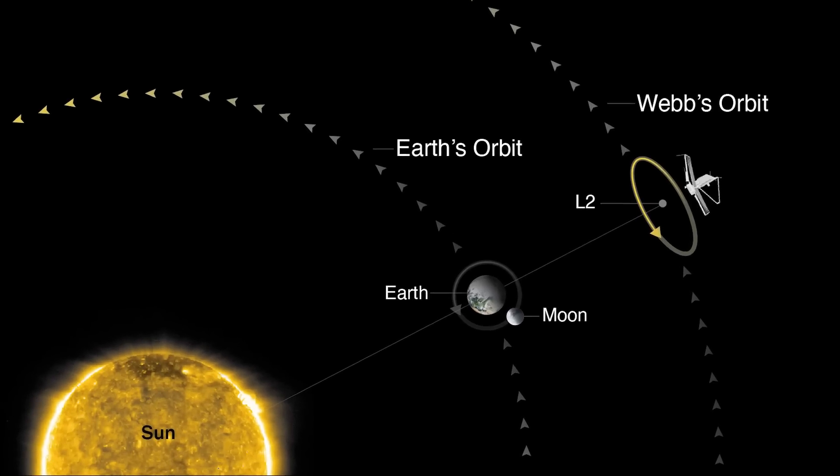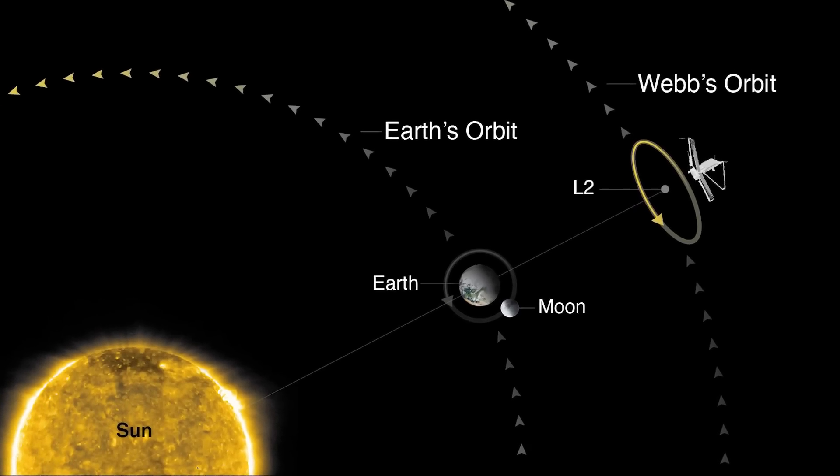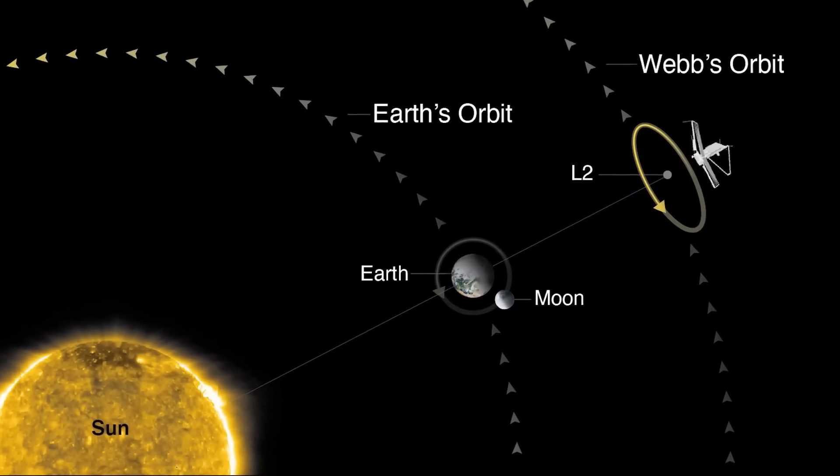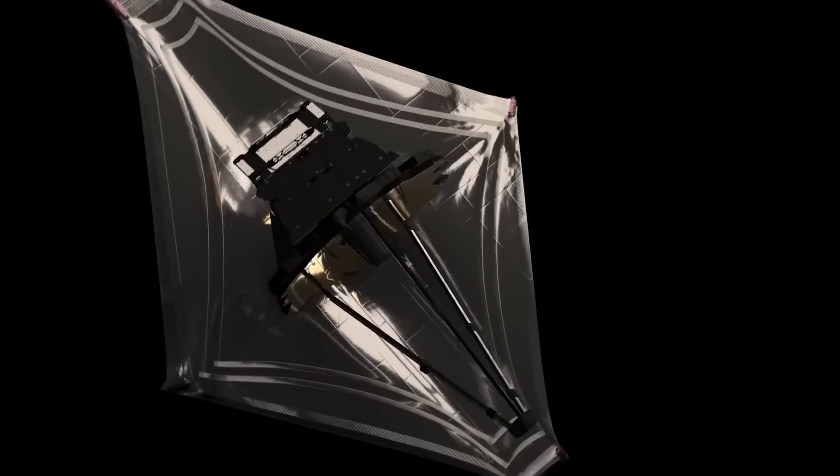The James Webb Space Telescope orbits the Sun rather than the Earth, but the concept is the same. When the orbital distance increases, the amount of time required to complete one cycle also increases.